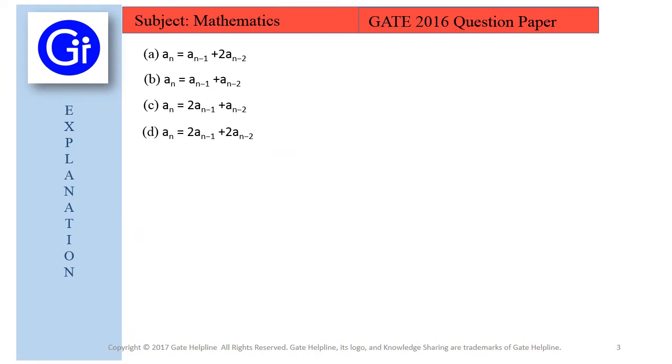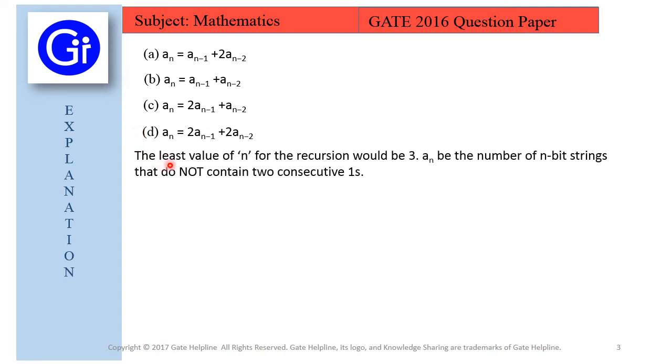Now we will see the explanation to this question. Looking at these four options, the least value of n for the recurrence would be 3, as all four options are dependent on the value of a_{n-1} and a_{n-2}. So for n-1 and n-2, n's value must be equal to 3 or greater than 3.